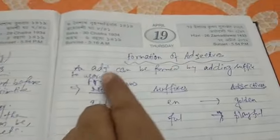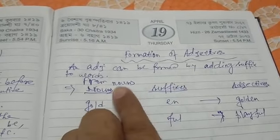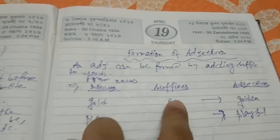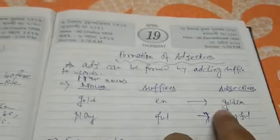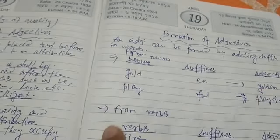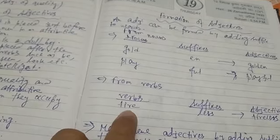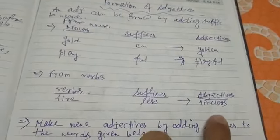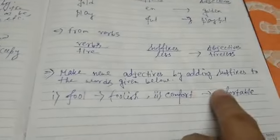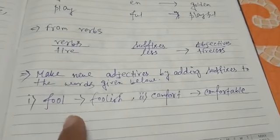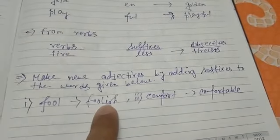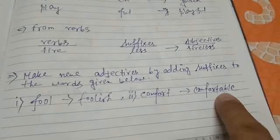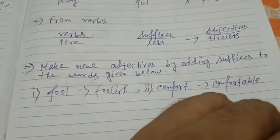Next: formation of adjectives. An adjective can be formed by adding suffixes. From nouns — 'gold' is a noun; by adding the suffix '-en', the adjective becomes 'golden'. From verbs — 'tire'; by adding the suffix '-less', the adjective becomes 'tireless'. Now make new adjectives by adding suffixes to the words given. For example: 'fool' with suffix '-ish' makes 'foolish'; 'comfort' with suffix '-able' makes 'comfortable'.